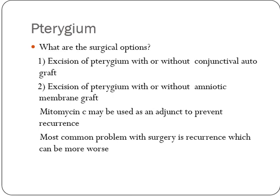The most important surgical option is excision of the pterygium. This can be combined with a conjunctival autograft, where conjunctiva is taken from another part of the same or opposite eye and transplanted, or an amniotic membrane graft can be used to cover the area. Mitomycin C (MMC) can be used as an adjunct to prevent recurrence. The most common problem after surgery is risk of recurrence, which can sometimes be worse than the original presentation, so thorough assessment and patient counseling are essential.